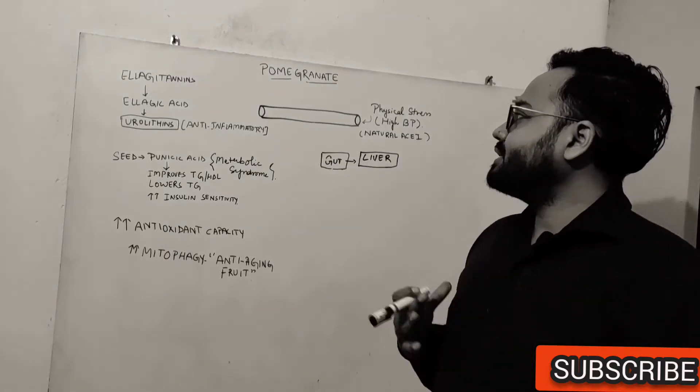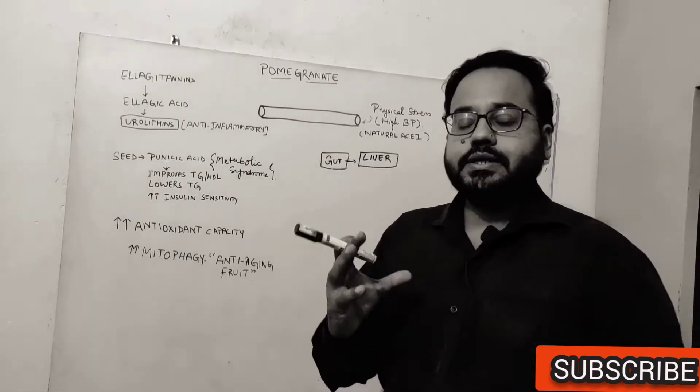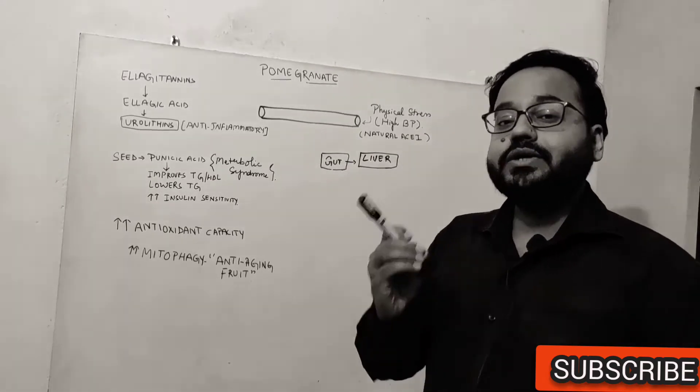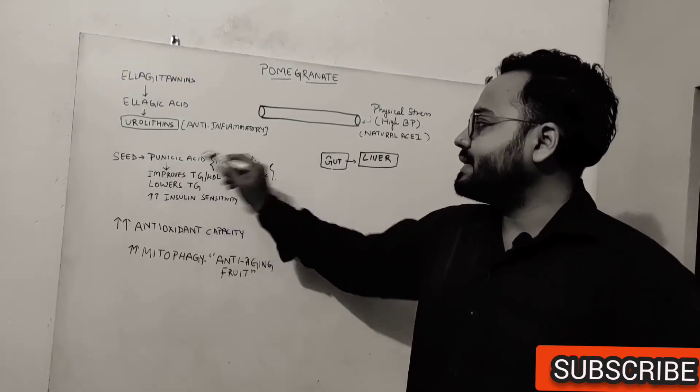So you should be eating pomegranate as a whole fruit rather than juicing. You should be eating whole fruit. You want to eat the seed also because the seed has got punicic acid.